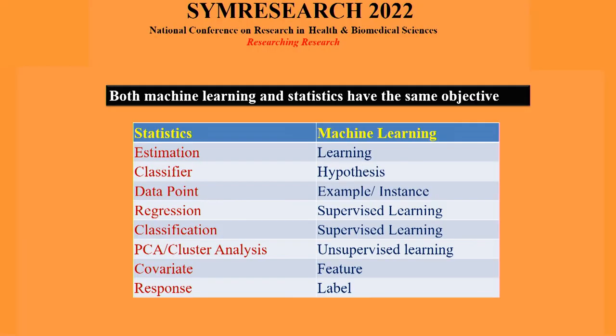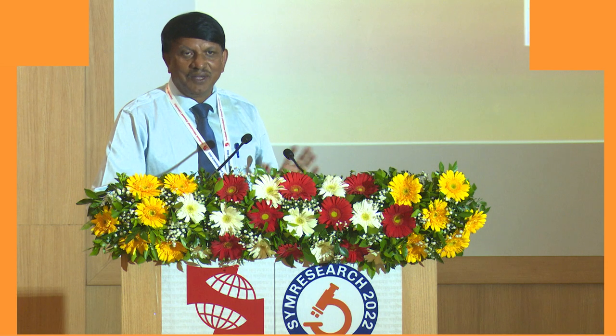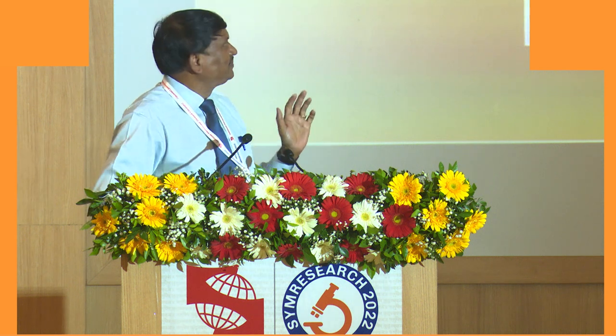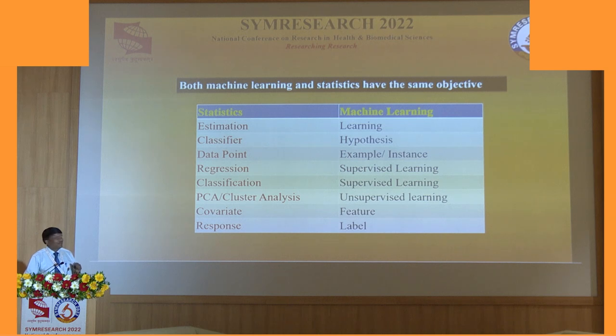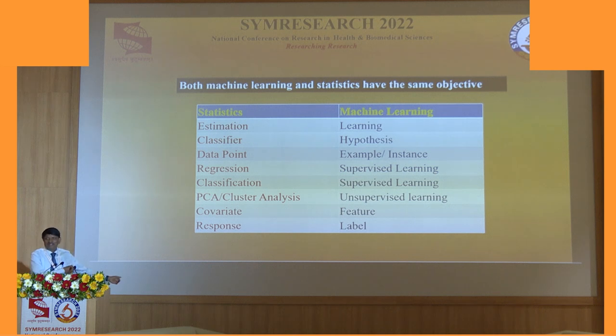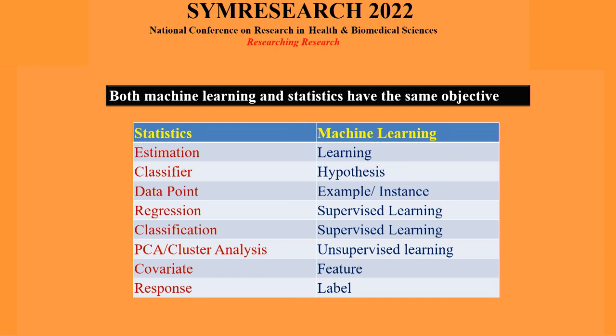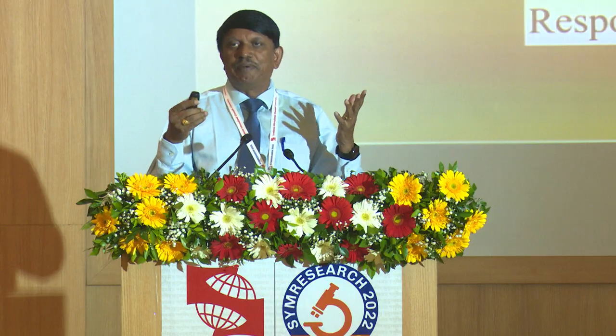Coming to how data science people have renamed our statistics: estimation is now called learning, classifier is called hypothesis, regression is supervised learning — what a beautiful name — classification is also supervised learning, PCA and cluster analysis they named unsupervised learning, covariate they call feature, and response they name label. Don't get panicked or fascinated by these words — these are all statistical words being used since the 18th century, just renamed.